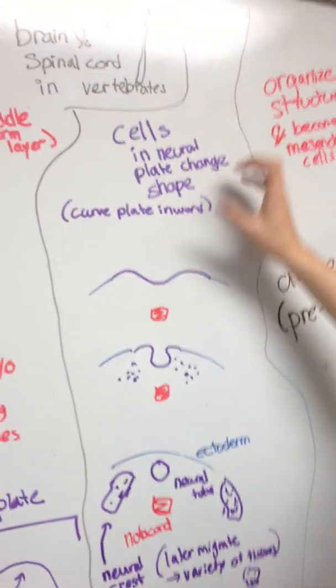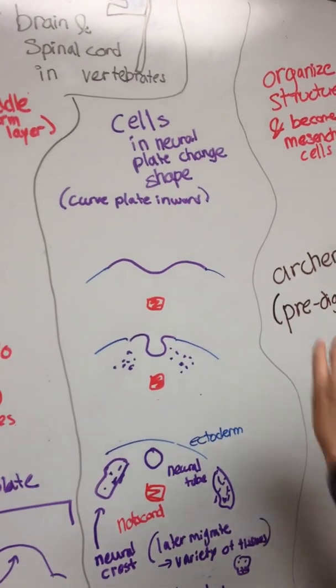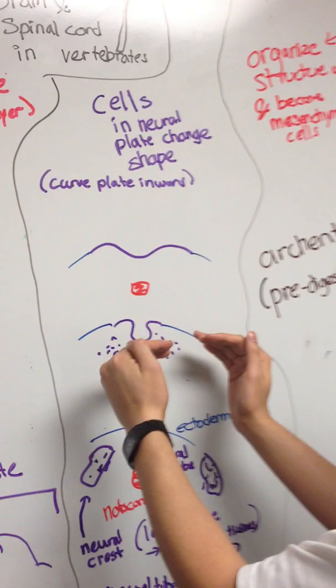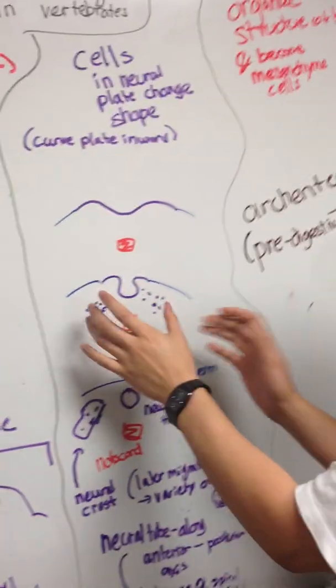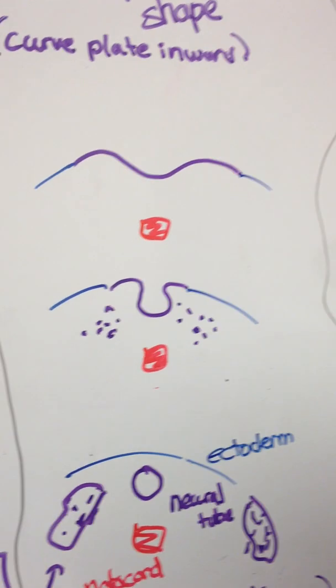Here we can see that the cells in the neural plate start to change shape. They curve inward. We can see this inward curve right here. And as we curve inward, we see these little fragments start to trickle down. These are the fragments of the neural crest.